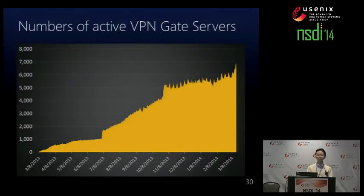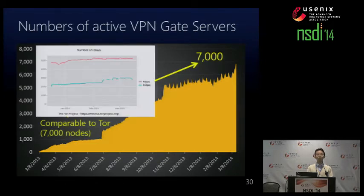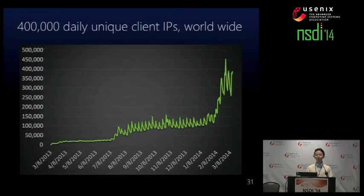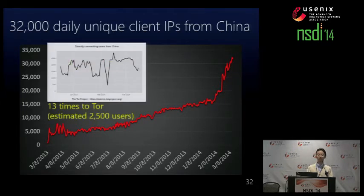This slide shows the number of active VPN Gate servers approaching 7,000 servers — comparable to the number of Tor servers. This slide shows the number of daily unique client IP addresses worldwide, implying the number of unique users: 400,000 users a day. We have 32,000 daily unique clients from China — not a huge number, but it is comparable — about 13 times the number of Tor users from China.